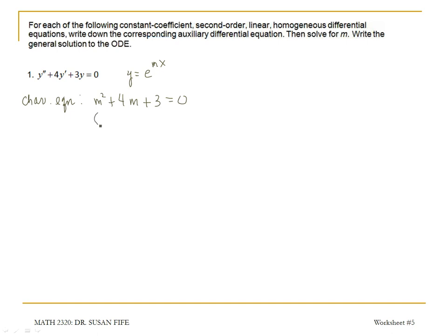This is an equation that we can solve by factoring. This factors into m plus 3 times m plus 1. And then setting your factors equal to 0, we get m is equal to negative 3 and m is equal to negative 1.